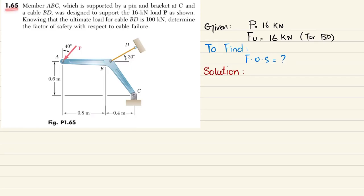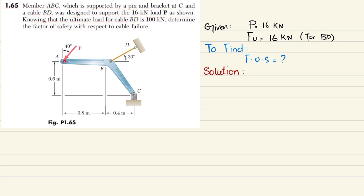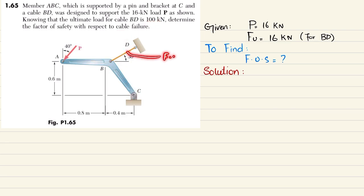Welcome back. Problem 1.65. Member ABC is supported by a pin and bracket at C, and cable BD was designed to support a 16 kilonewton load. Knowing that the ultimate load for cable BD is 100 kilonewtons, determine the factor of safety with respect to cable failure. So let's start with the solution.